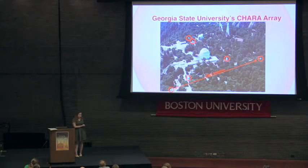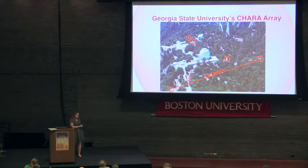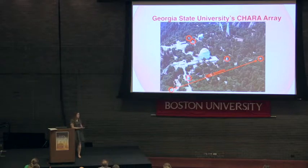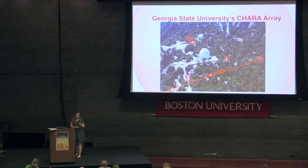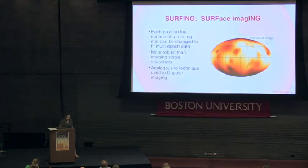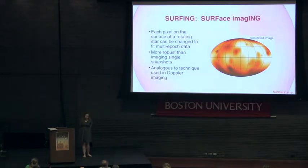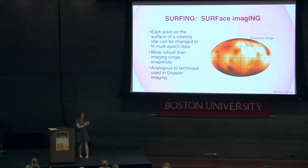For this project, I use Georgia State University's Center for High Angular Resolution Astronomy, or CHARA, Array — located on Mount Wilson outside Los Angeles, consisting of six one-meter class telescopes in a Y-shaped configuration with baselines from 30 to 330 meters. I use the Michigan Infrared Combiner, or MIRC, recently upgraded to MIRC-X in a collaboration between Michigan and Exeter. The imaging algorithm, called 'surfing,' written by my PhD advisor John Monnier, observes the star over a full rotation and maps each pixel on the surface from multiple epochs.